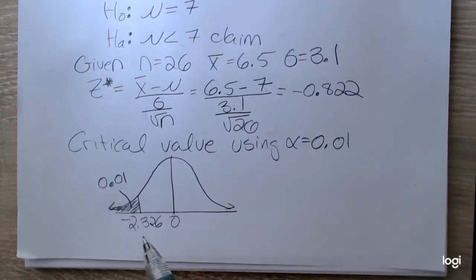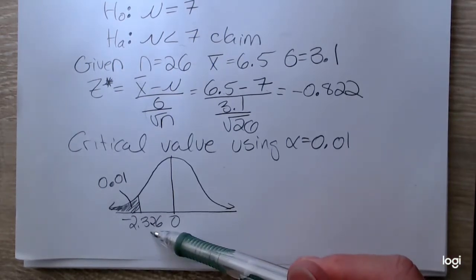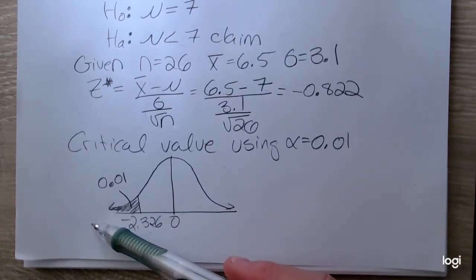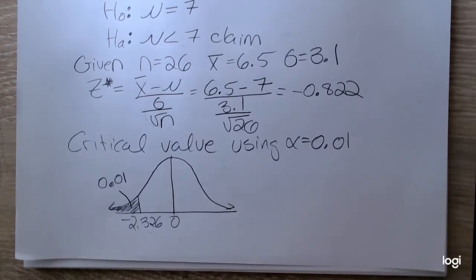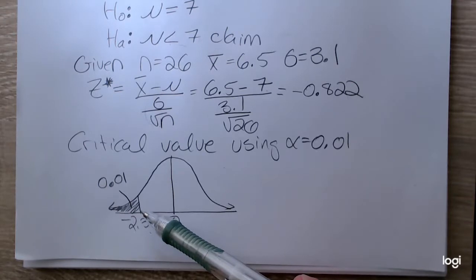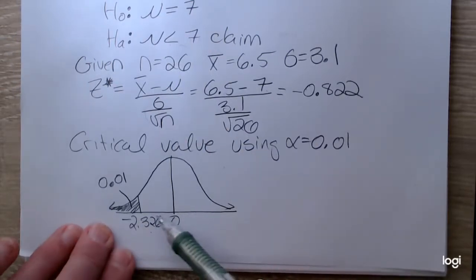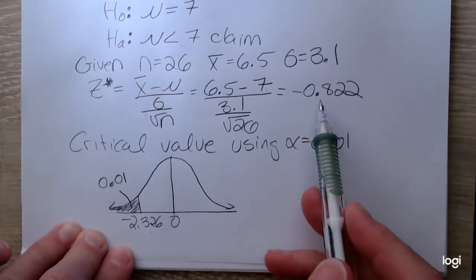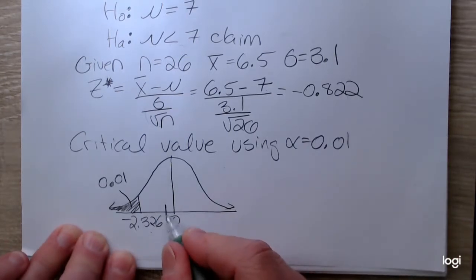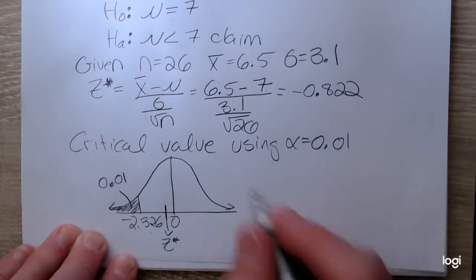This makes sense with respect to what I expected. I expected my critical value to be negative because it is below 0. Now I need to compare the standardized test statistic to the critical value. If it's further out in the tail, in other words, if it's less than negative 2.326, my decision would be to reject the null hypothesis. And I would be in support of the claim. If the standardized test statistic is in the fail to reject region, then I would not be supporting the claim. So this is a real number line. Smaller numbers are further to the left. Larger numbers are further to the right. Negative 0.822 is pretty close to zero on this. So this is where Z-star is, my standardized test statistic. So clearly the decision is to fail to reject the null.